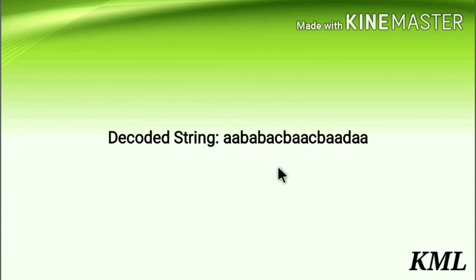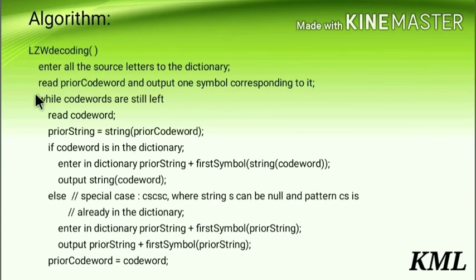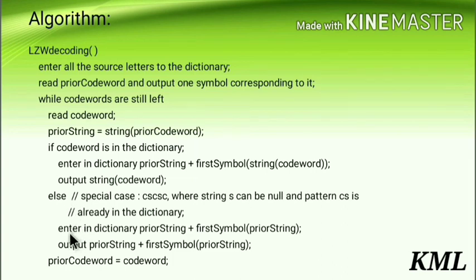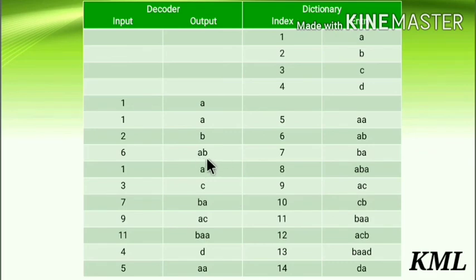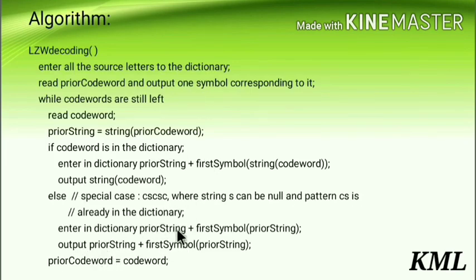In this problem we did not encounter the else part. The else part is similar to the if part. What you do in the else part: enter in dictionary prior_string plus first symbol of the prior_string. For example, if your prior_string is 'ab', you enter 'ab' plus first symbol of prior_string, which is 'a', giving 'aba'. You output the same thing — the dictionary entry and the output are the same in the else case.